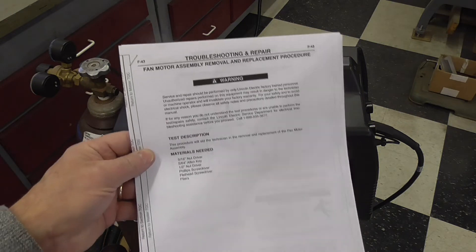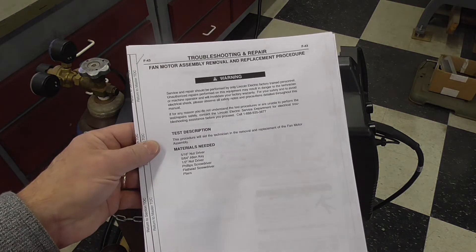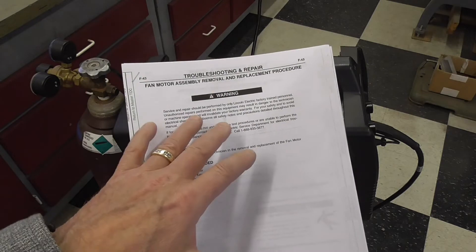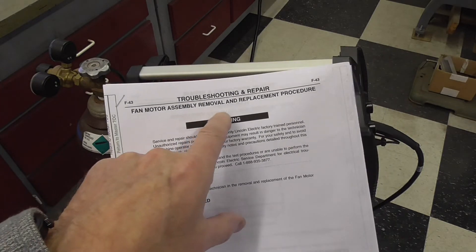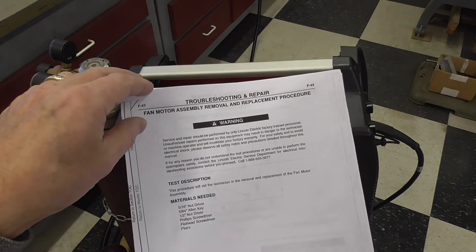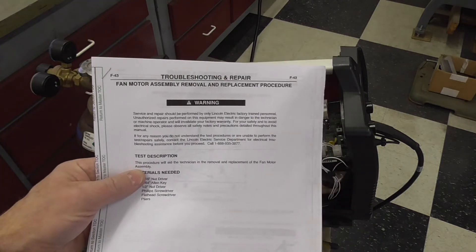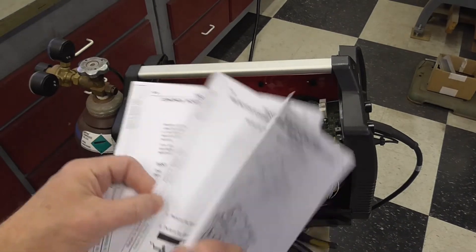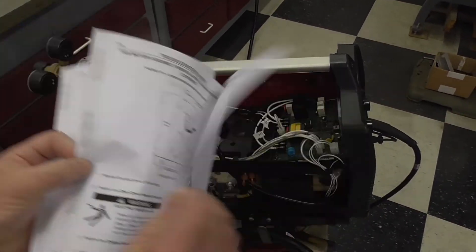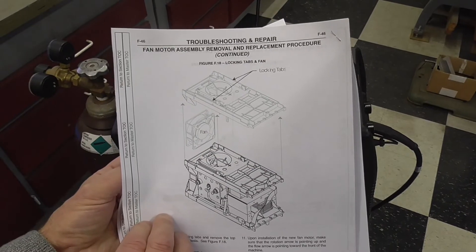I also found online repair service documentation for this unit. And you can see here it says fan motor assembly removal and replacement procedure and it's three or four pages. Again this is online it's supplied by Lincoln. Here's some instructions of how to get it out.